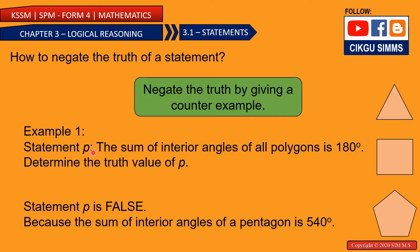So for example, this is statement P: the sum of interior angles of all polygons is 180 degrees. Polygons include the regular triangle, the square, the pentagon, and so on. The interior angles mean the angles inside the polygon.